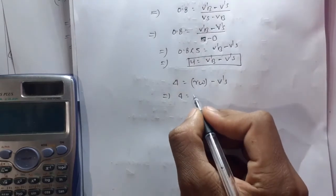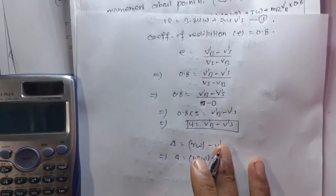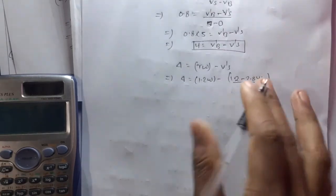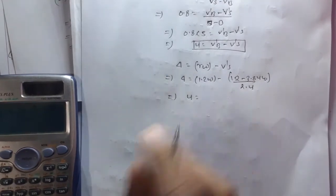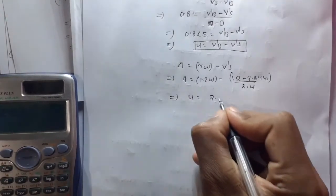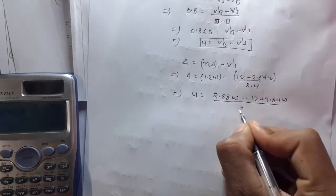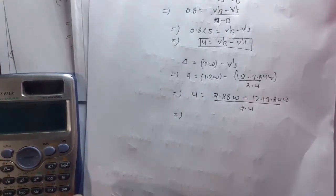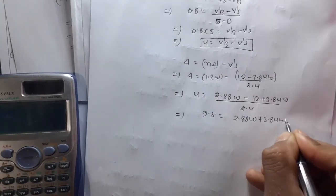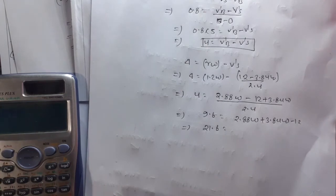Substituting v'_B = 1.2·omega into the restitution equation and combining with equation 1: 9.6 = 2.88·omega + 3.84·omega - 12. This gives 21.6 = 6.72·omega, so omega = 21.6/6.72 = 3.21 rad per second.